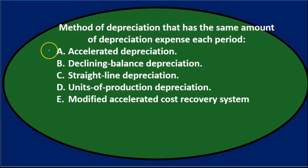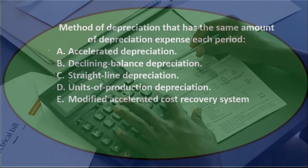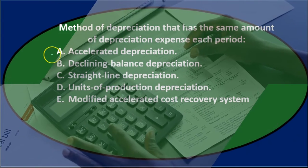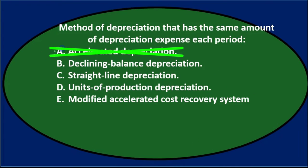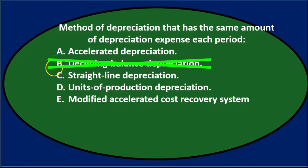Let's go through this again. Method of depreciation that has the same amount of depreciation expense each period. A. Accelerated depreciation — that's going to have a different amount, because it'll be accelerated, having more in the front of the time frame than the end. B. Declining balance depreciation, which is a form of accelerated depreciation, and therefore not correct either.